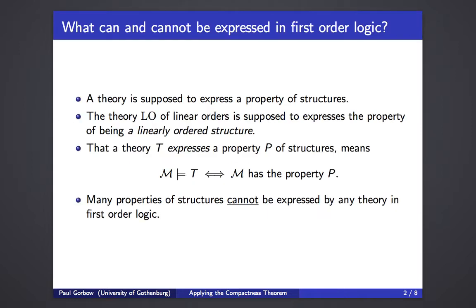Our motivating question here is what can and what cannot be expressed in first-order logic. A theory is supposed to express a property of structures. For example, the theory of linear orders is supposed to express the property of being a linearly ordered structure, in the sense that the models of the theory of linear orders are exactly the linearly ordered structures.